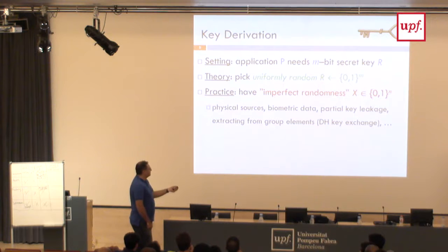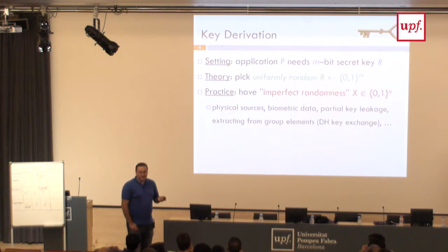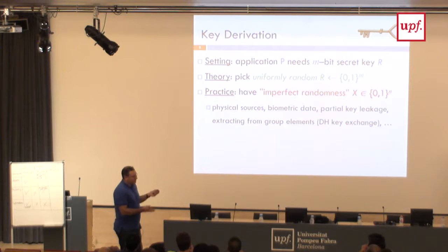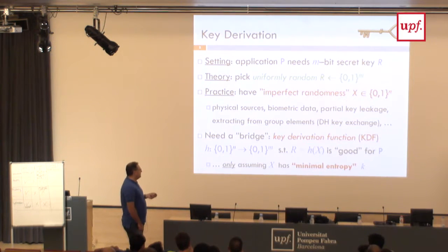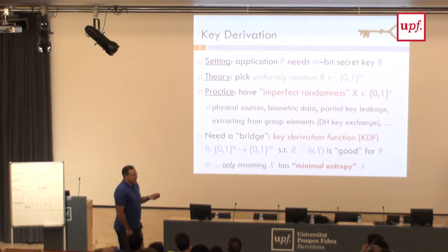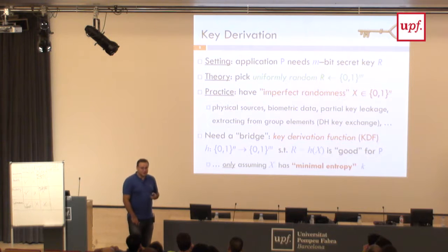One important application that happens in practice all the time: you do a key exchange — say, Diffie-Hellman — you agree on some group element, but the application doesn't talk about group elements. It needs a key for AES or something like that. So you need to take this group element, hash it, and map it to a uniformly random key. That's another great application. So we need a bridge, and the bridge is a key derivation function, which takes the source and outputs the keys we want. Assuming that X has min entropy, we would like to not assume much more about it.